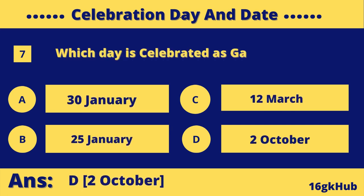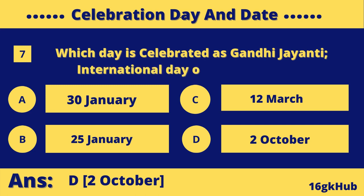Which day is celebrated as Gandhi Jayanti and International Day of Nonviolence? Option A: 30th of January. Option B: 25th of January. Option C: 12th of March. Option D: 2nd of October. The correct answer is Option D: 2nd of October.